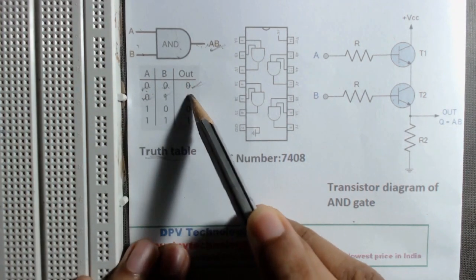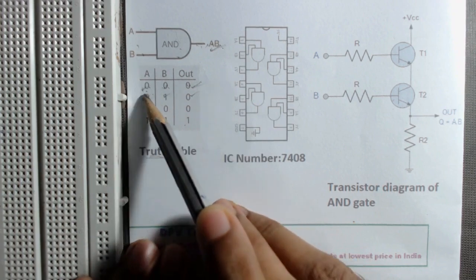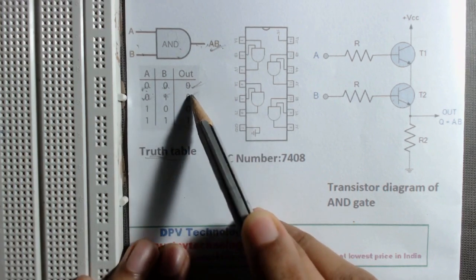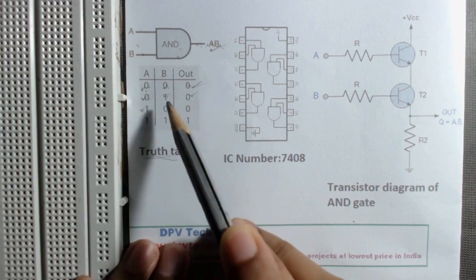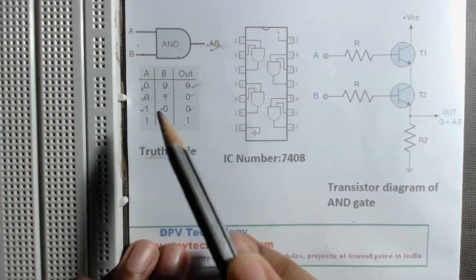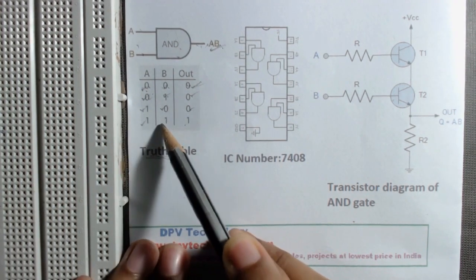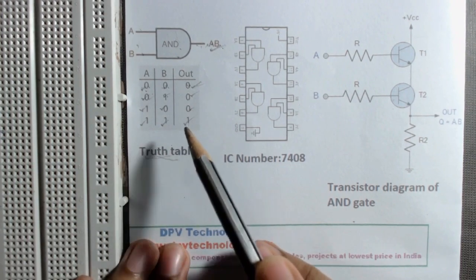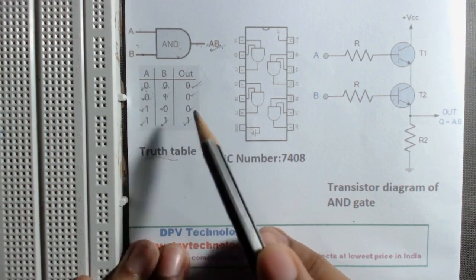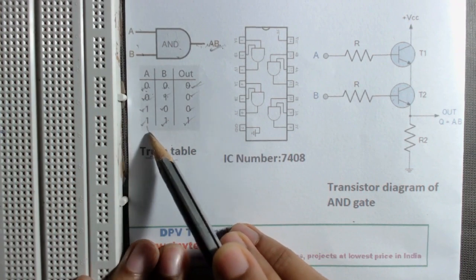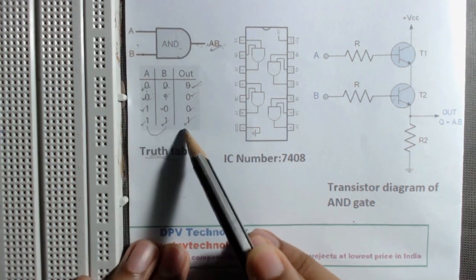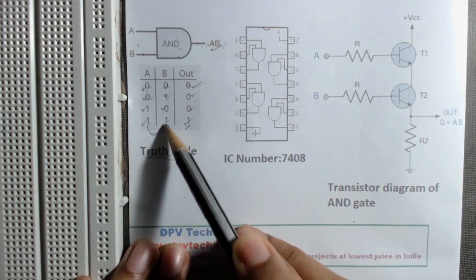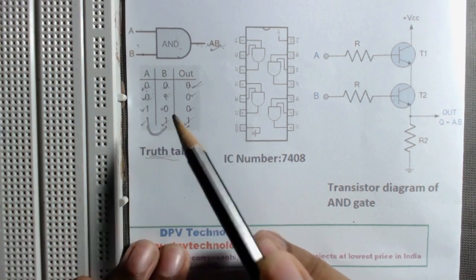Similarly, 1 × 0 is 0, and lastly 1 × 1 = 1. From this truth table we can see that for an AND gate, we will get 1 at the output if and only if both input channels are 1.